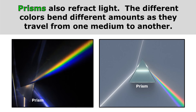Prisms also refract light. The different colors bend different amounts as they travel from one medium to another. So if I shine white light through a prism, I'll get a rainbow on the other side. White light looks white because it actually contains all of the colors. You can see very clearly that as that beam of white light goes through the prism, it spreads apart, and on the other side you can see all the colors that have been refracted different amounts.